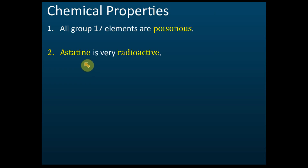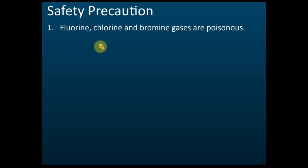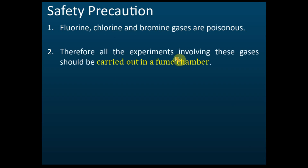The last element in Group 17 is astatine, and it is a radioactive element. So Group 17 elements are poisonous and the last one is radioactive. Since fluorine, chlorine, and bromine gases are all poisonous, experiments involving them need to be carried out in a fume chamber. Every lab normally has a fume chamber at the back, and any experiment involving fluorine, bromine, or chlorine should be done there.